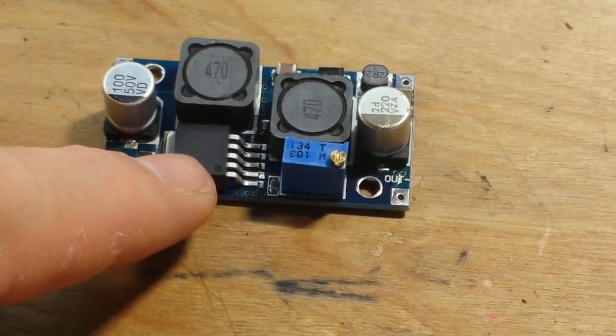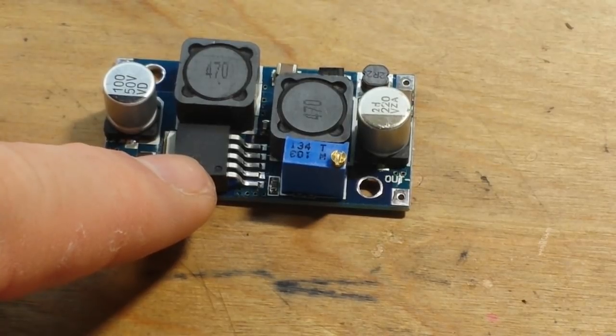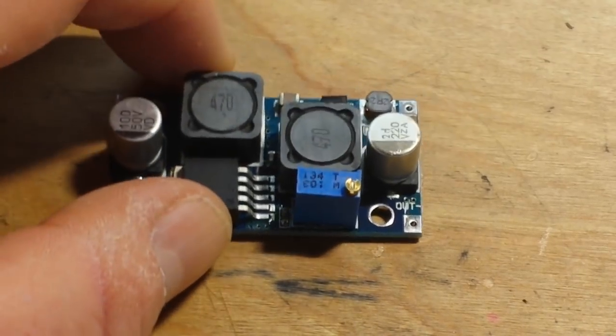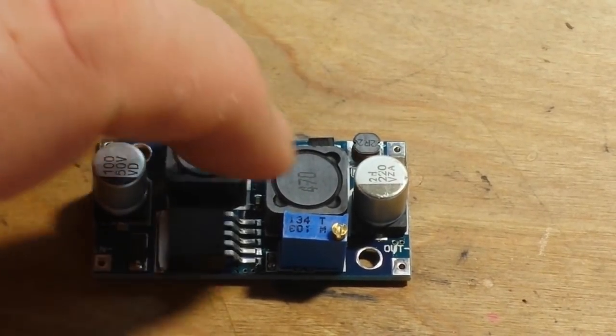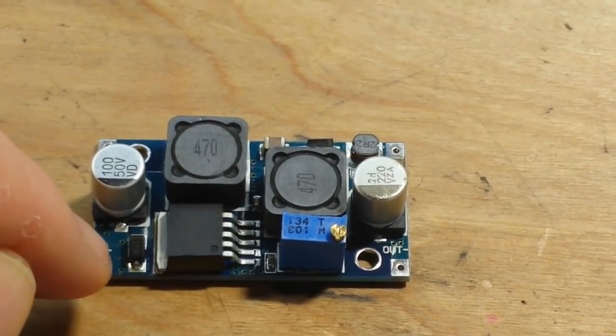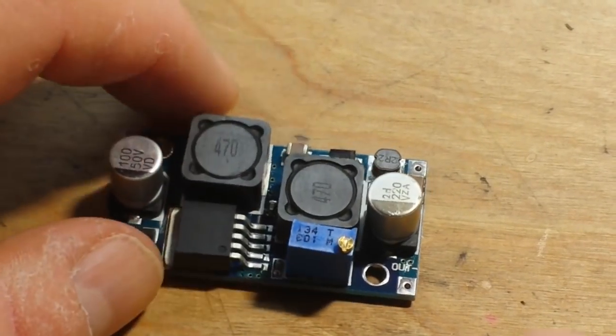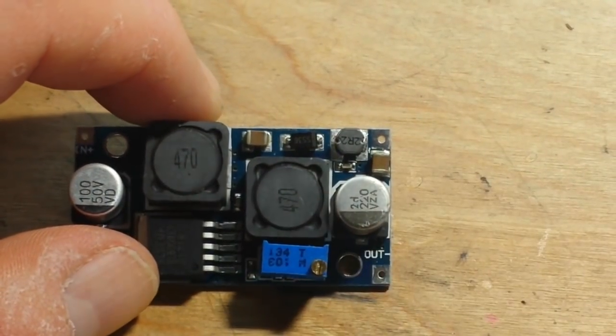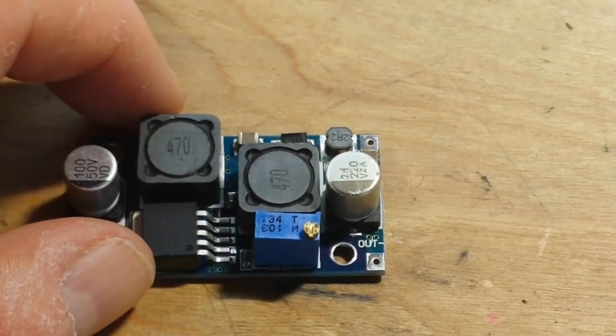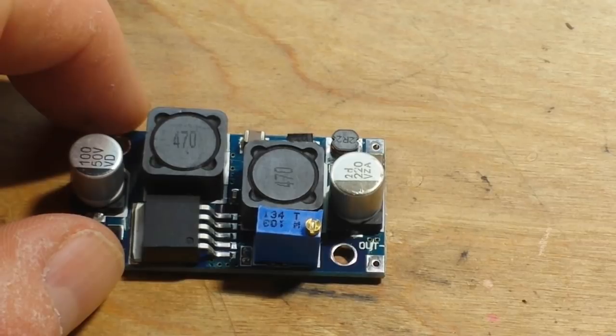This is the XL6009, a buck-boost chip. You can see we have two inductors, we also have two diodes here, and I'm going to bring this over to the microscope so we can take a closer look.